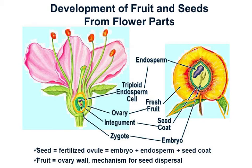The seed is the fertilized ovule and the fruit is the ovary wall. If this is a juicy, sweet fruit it will be dispersed by animals — for instance, if growing in the wild a monkey eats the fruit and throws away the seed, which may germinate if it gets the suitable conditions necessary for germination. So the ovary becomes the fruit, and the seed is the fertilized ovule.